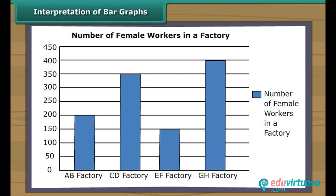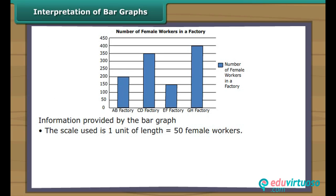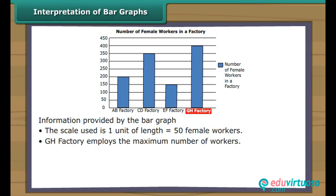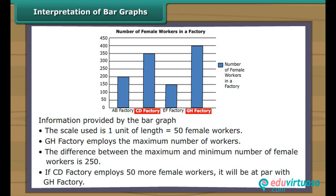Let us interpret one more bar graph. This is a vertical bar graph showing details of female workers in a factory. The scale used is one unit of length equal to 50 female workers. GH factory employs the maximum number of workers. The difference between the maximum and minimum number of female workers is 250. If CD factory employs 50 more female workers, it will be at par with GH factory.